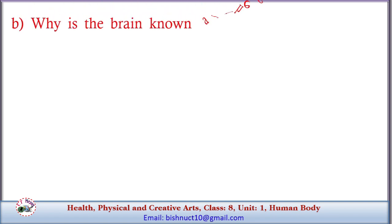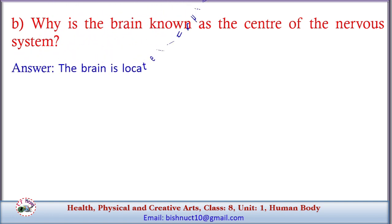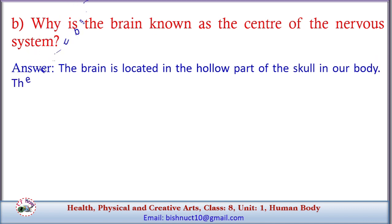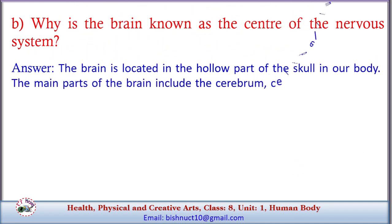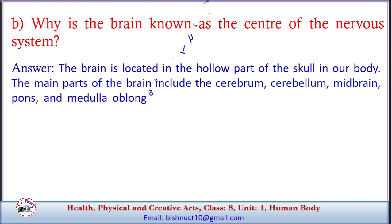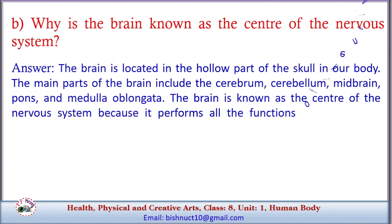B. Why is the brain known as the center of the nervous system? Answer: The brain is located in the hollow part of the skull. The main parts of the brain include the cerebrum, cerebellum, midbrain, pons, and medulla oblongata. The brain is known as the center of the nervous system because it performs all the functions of the nervous system, controlling and coordinating the activities of all the systems in the body.